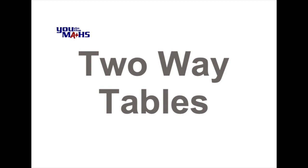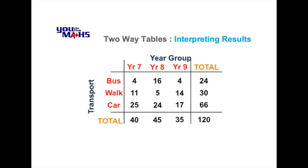In this video we'll look at how to interpret two-way tables. In this particular example it breaks down modes of transport for students going to school based on different year groups, in this case Year 7 to Year 9.